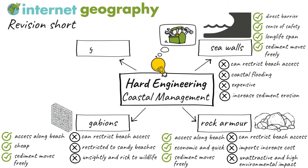Groins are wooden barriers constructed at right angles to the beach to retain the material. The beach material, including sand and pebbles, are trapped between groins and cannot be transported away by longshore drift. Groins encourage a wide beach, which helps absorb energy from waves, reducing the rate of cliff erosion.